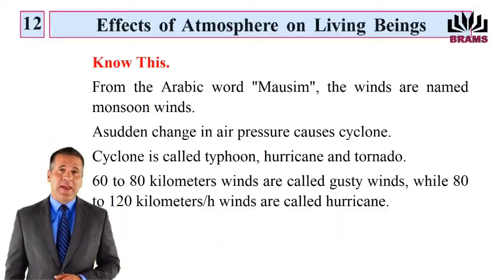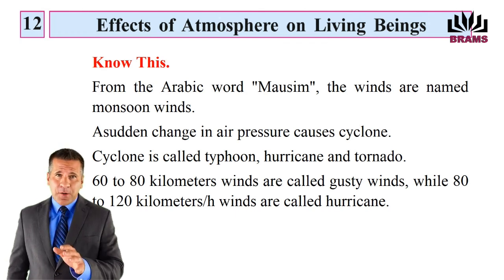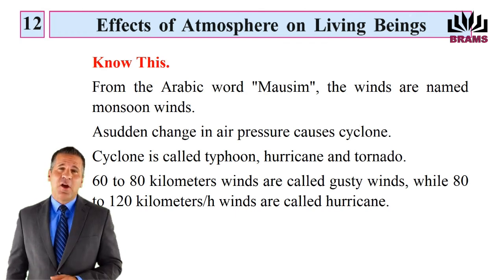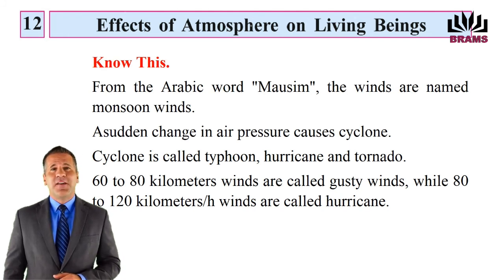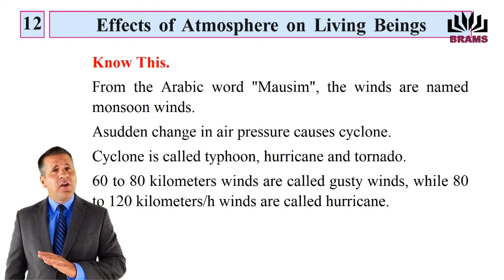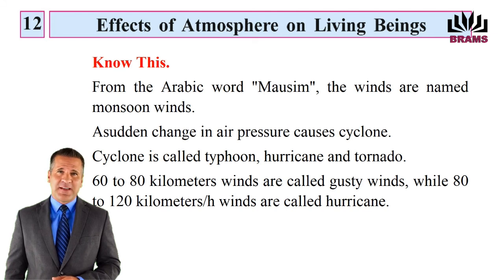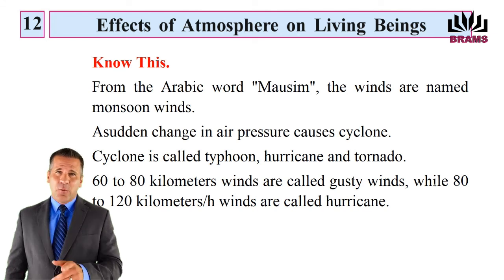Know this: From the Arabic word 'mossim', the winds are named monsoon winds. A sudden change in air pressure causes a cyclone. Cyclone is called typhoon, hurricane and tornado. Winds of 60 to 80 km/h are called gusty winds, while 80 to 120 km/h winds are called hurricane.